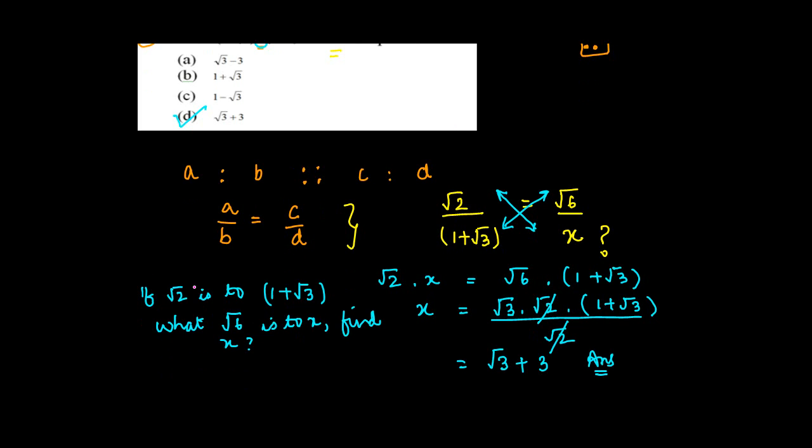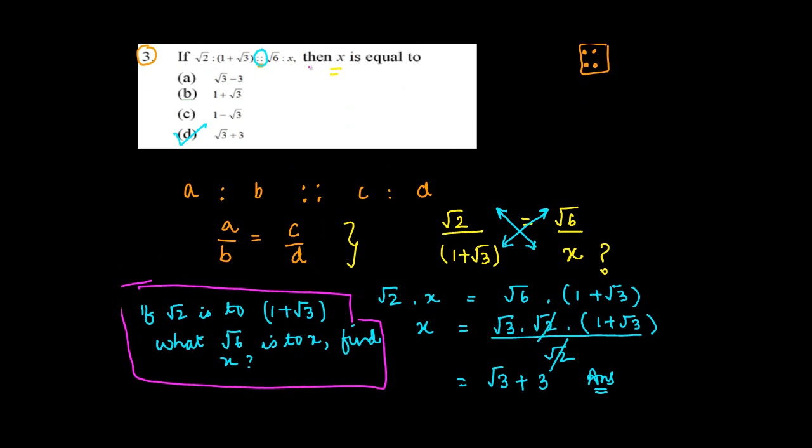Now if you notice this, effectively, what this means is the same as what you have in this question. What does this mean? If root 2 is to 1 plus root 3, this means if the proportion of root 2 to 1 plus root 3 is equal to the proportion which root 6 bears to X, find X. So this is another way of just writing this simple thing.